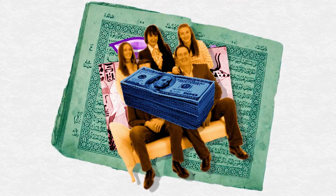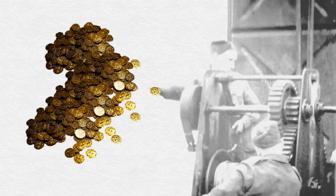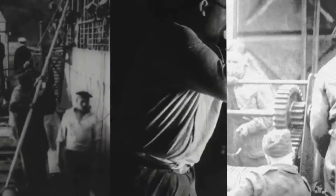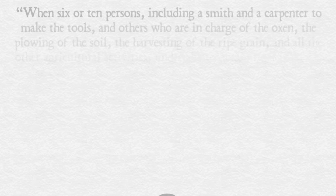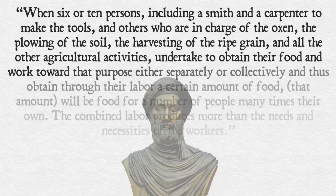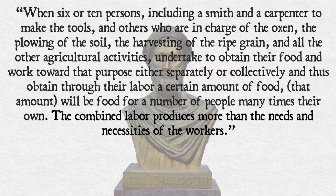Like Smith, Khaldun points to labour, not gold or silver, as the source of wealth and advocates for the division of labour in the same way Smith did. He said that when six or ten persons, including a smith and a carpenter to make the tools, and others who are in charge of the oxen, the ploughing of the soil, the harvesting of the ripe grain, and all the other agricultural activities, undertake to obtain their food and work toward that purpose, either separately or collectively, and thus obtain through their labour a certain amount of food, that amount will be food for a number of people many times their own. The combined labour produces more than the needs and necessities of the workers.